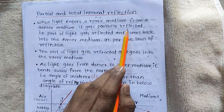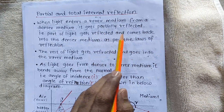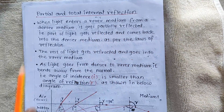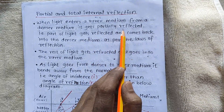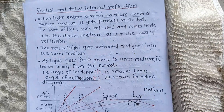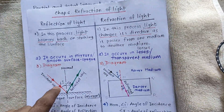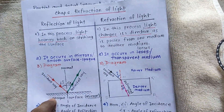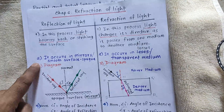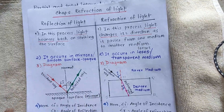In the first video of this refraction of light series, I told you the difference between reflection and refraction. So over here we are talking about reflection — where the incident ray falls on the surface and bounces back.